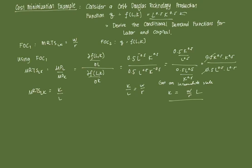So again, the second first order condition requires that the production target is met. So remember that using FOC2, we're going to get Q equals L to the 0.5 K to the 0.5. But we have an intermediate value for K. So that's just going to be equal to L to the 0.5 times W over R times L raised to 0.5.